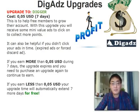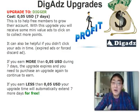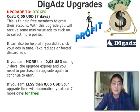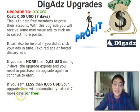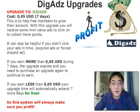If you earn more than $0.05 during seven days the Digger upgrade expires and you need to purchase it again. If you earn less than $0.05, your upgrade time automatically extends seven more days for free. So if you earn more than the cost of the upgrade it expires; if you earn less, you get another seven days free. This system will always make sure you profit.